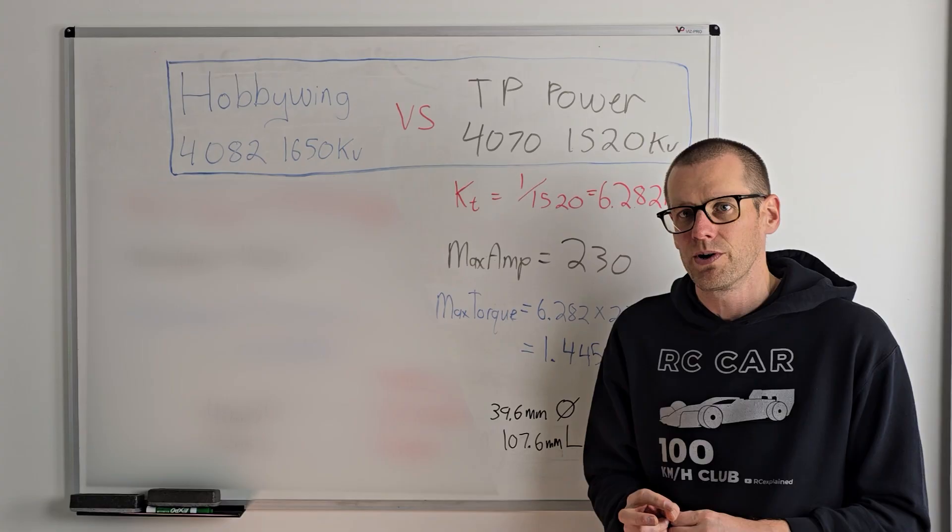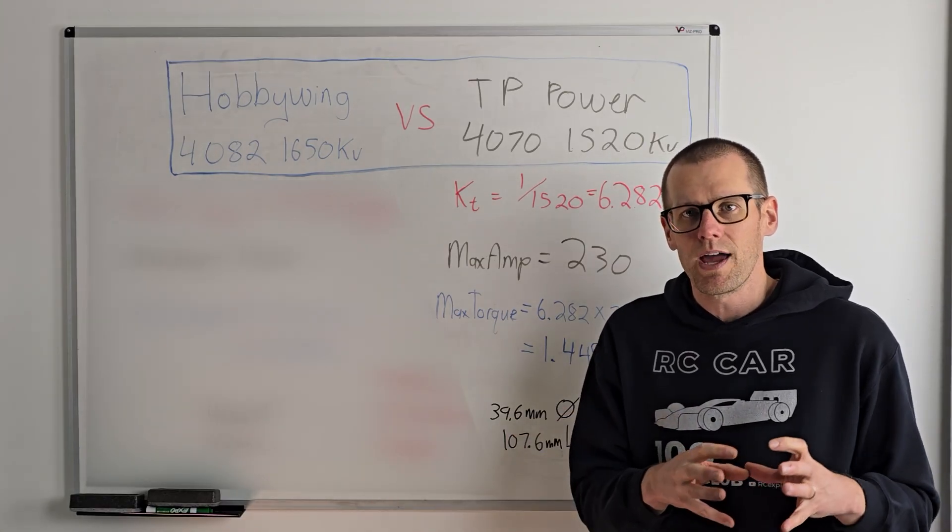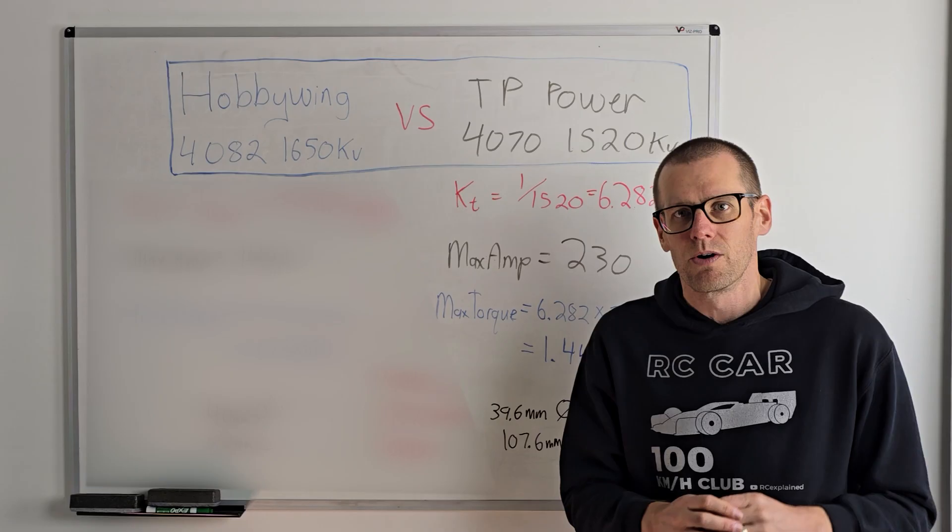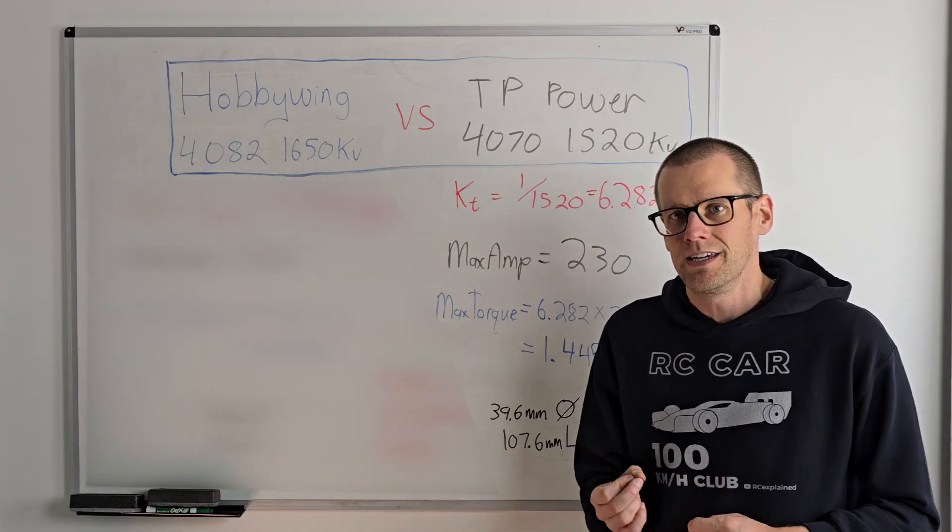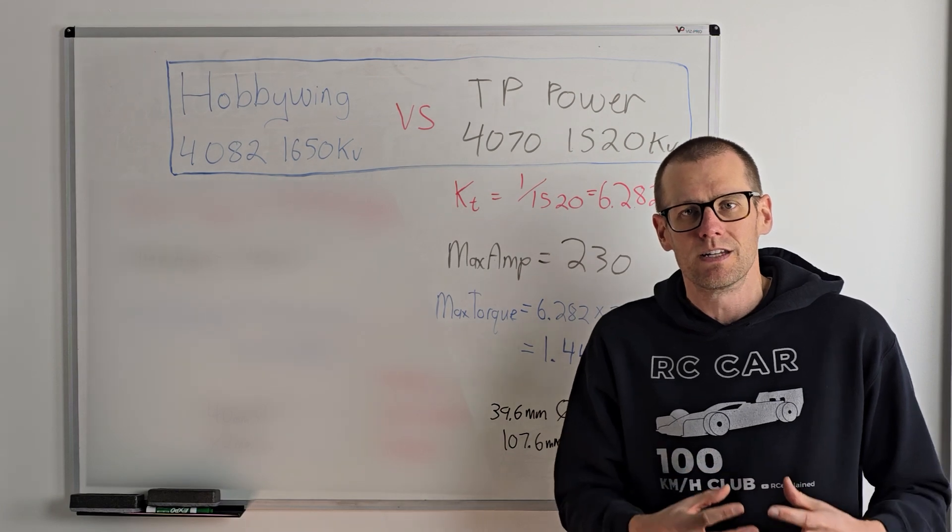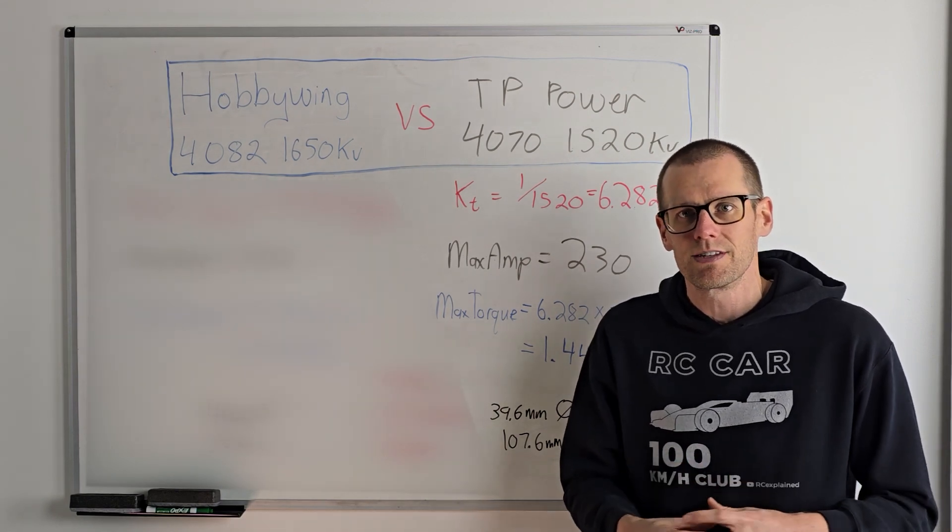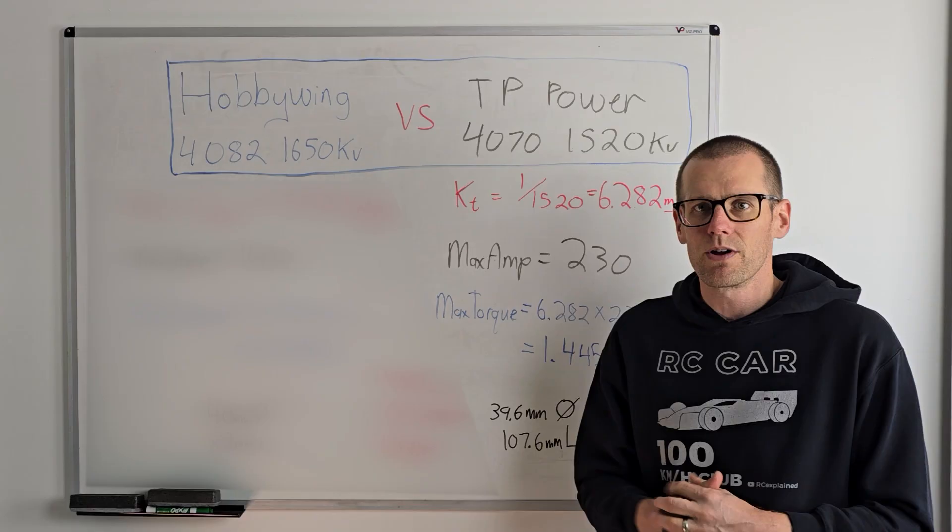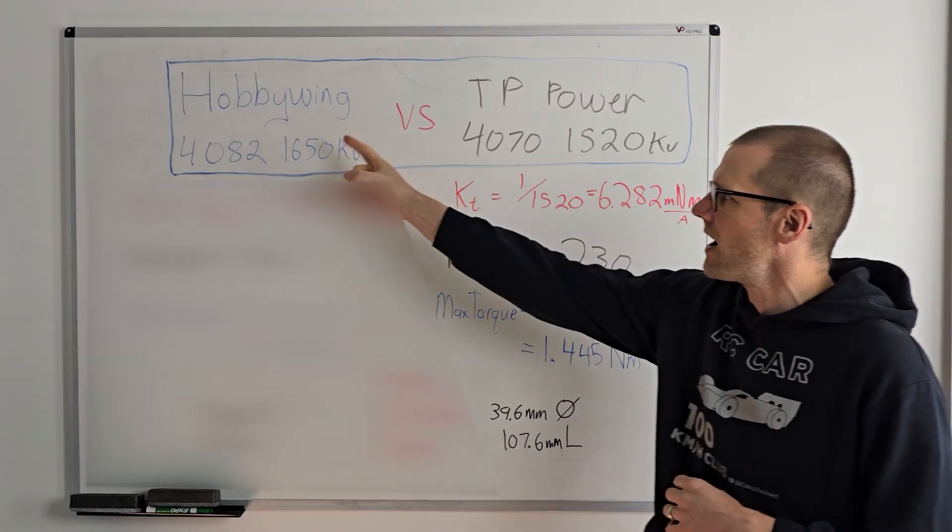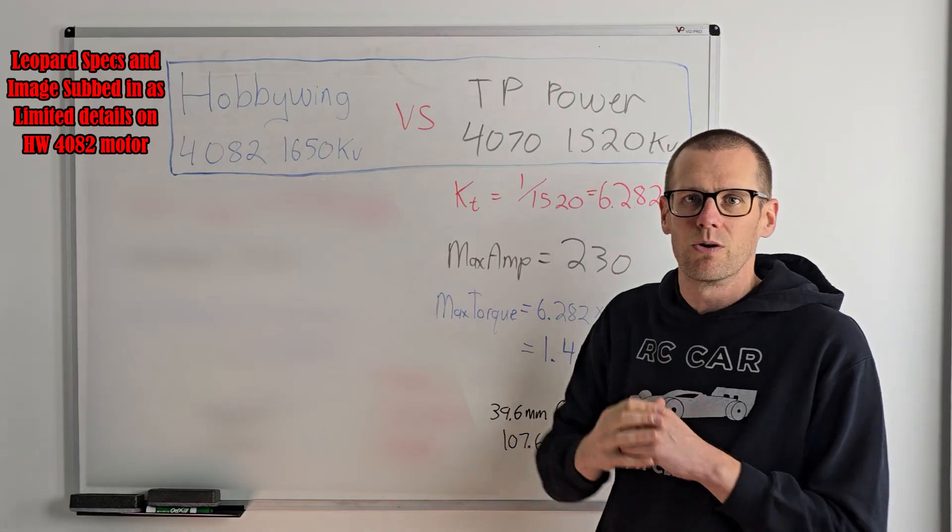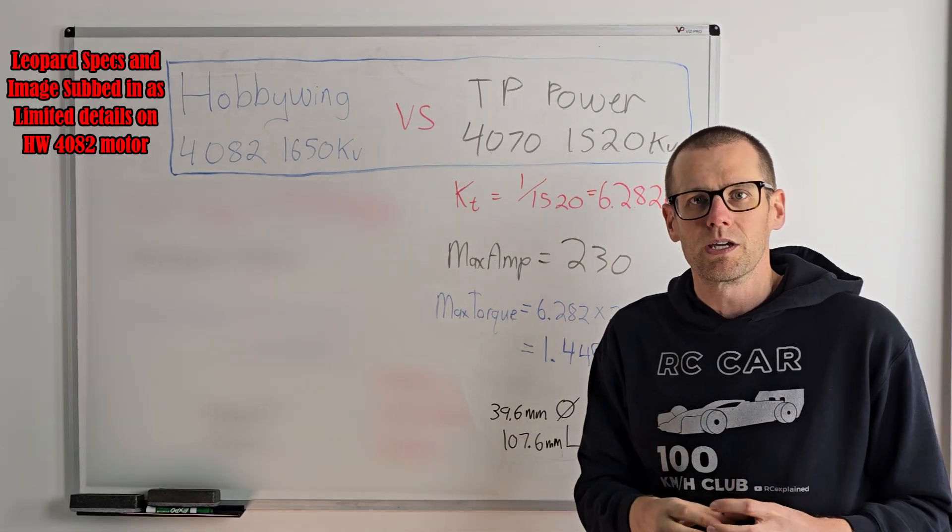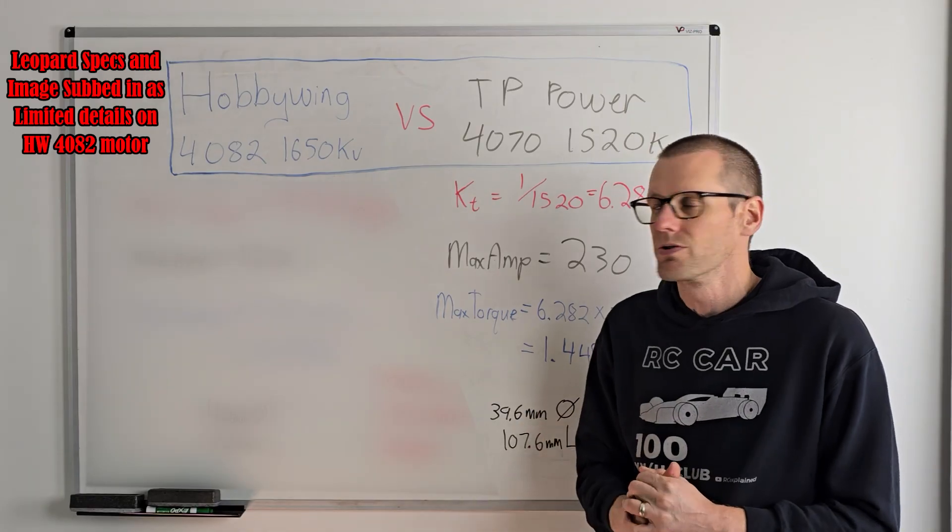Now a couple key points is that we are not doing this for a consistent and similar motor. Both of these brushless motors are wildly different and that is key. So we are going to expect different results because it's not of the same can size. The one brushless motor is going to be a Hobbywing 4082 1650 kV. We'll understand more about what those numbers mean as we go throughout this process.